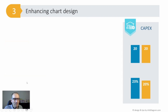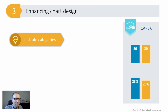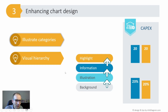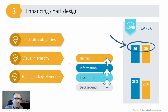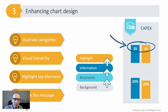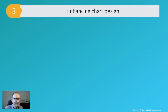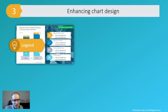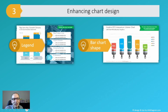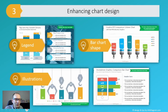To summarize: my tips to enhance charts graphically are to illustrate categories with icons, use colors with attention to visual hierarchy, highlight key elements with special markers, and write the message or meaning of the chart. Additionally, there are other ways to enhance chart design — you can create a custom legend manually, play with bar chart styling to create a creative-looking chart using paint brush shapes, add an illustration on top, or embed a bar chart inside some graphics.